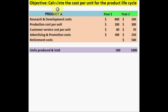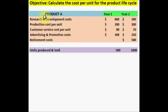In this exercise, we need to calculate the cost per unit for the product life cycle. So we have product A, which has year 1 and year 2 as a total life cycle. And these are the 5 costs that incurred over the entire life cycle of product A. The units produced and sold are 500 for year 1 and year 2 is 1000. So let's begin.